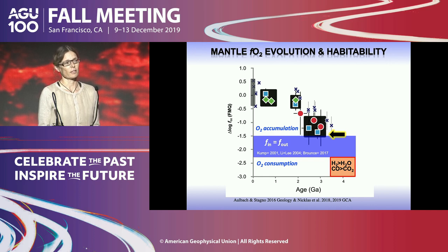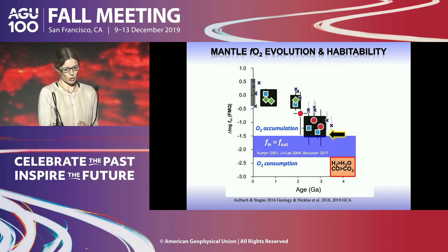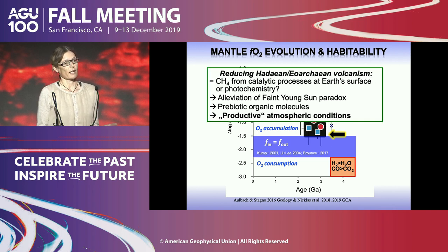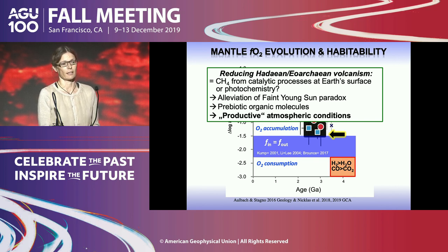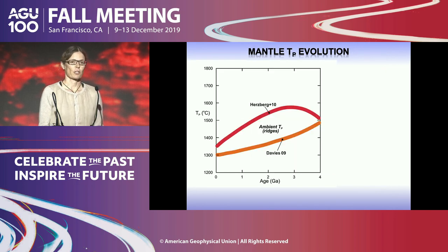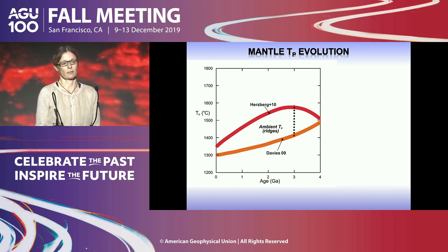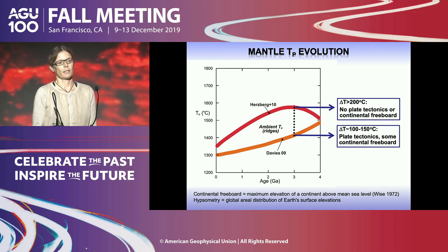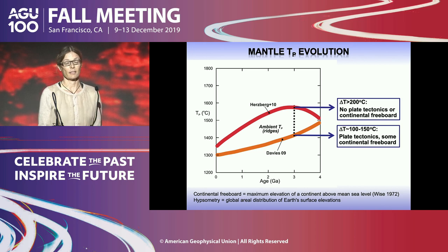What does this mean for habitability? The mantle transitioned from a state where volcanic gases would have consumed oxygen in the atmosphere to allowing oxygen accumulation, possibly coinciding with what we see as the first whiff of oxygen. Even more exciting: there's room for a more reducing Paleo-Archean and Hadean mantle, which released reducing gases into the atmosphere. Processes could then make methane from these reduced gases, helping alleviate the Faint Young Sun paradox and allowing the synthesis of prebiotic organic molecules.